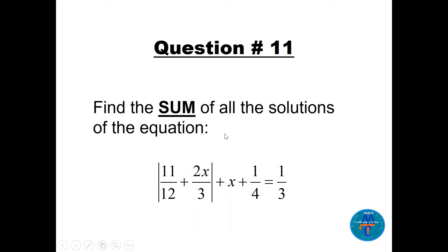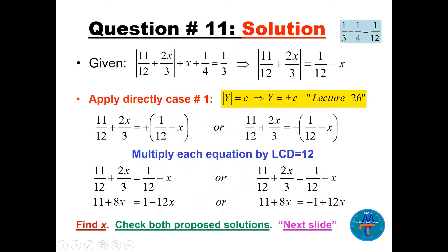When we see this equation we have to rearrange it — take 1/4 to the other side, take x to the other side, so x becomes minus x and 1/4 becomes minus 1/4. The calculation gives us 1/3 minus 1/4 equals 1/12. Now from lecture 26, this is case number one: if we have absolute value of y equal to c, then y will be plus or minus c. Remember, c should be a positive number, so we have to check at the end.